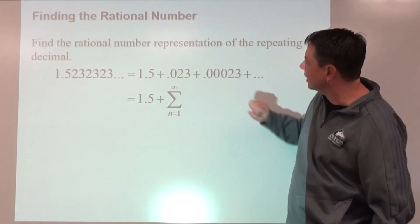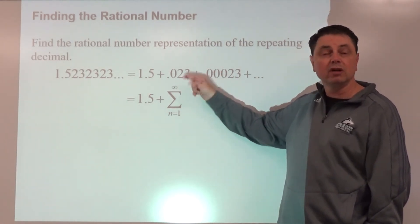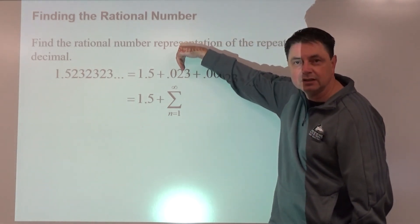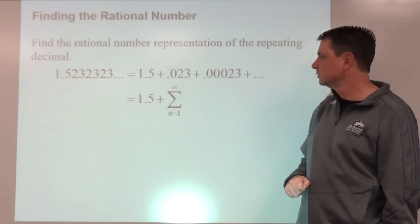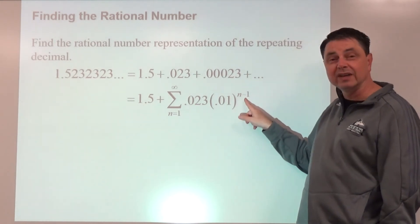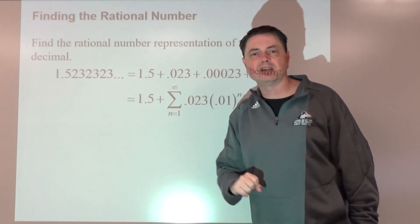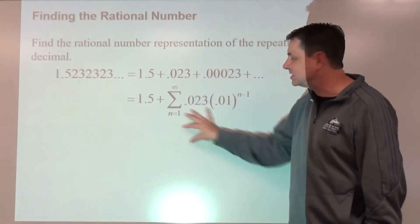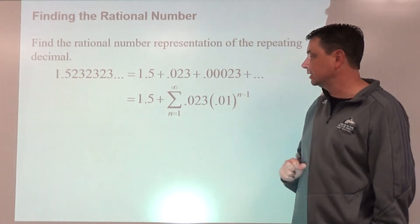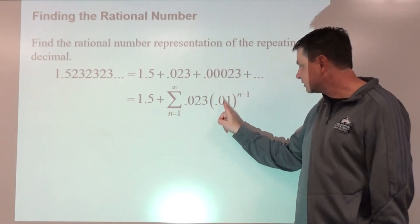For the repeating part, a-sub-1 is 0.023. To find r, take one term divided by the one before it — r equals 0.01. Setting up the infinite geometric series formula: a-sub-1 divided by one minus r. The denominator comes out to 0.99.